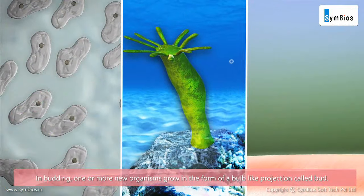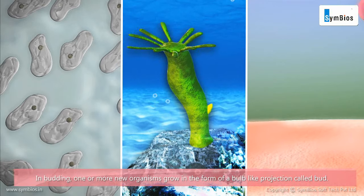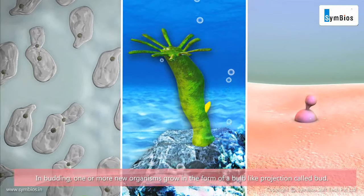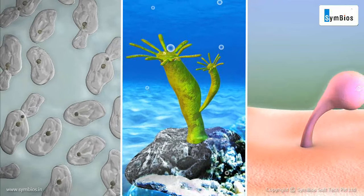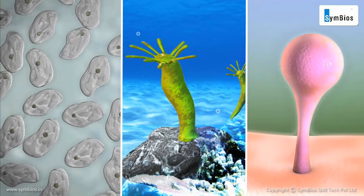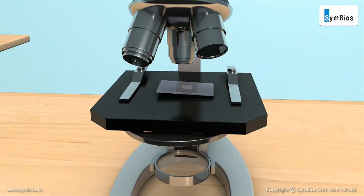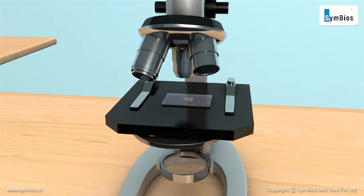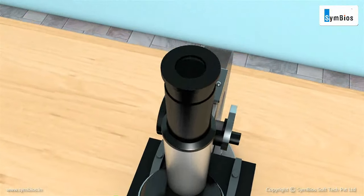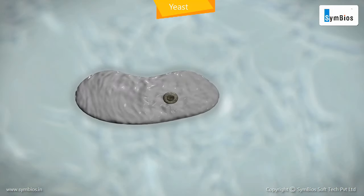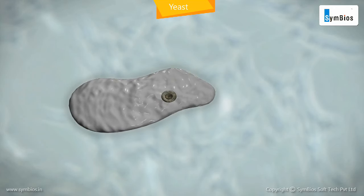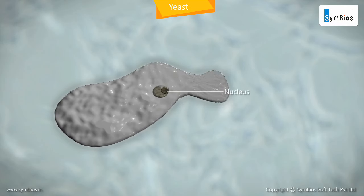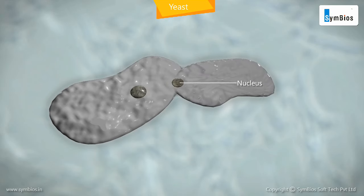In budding, one or more new organisms grow in the form of a bulb-like projection called a bud. It grows and then may eventually break away from the parent. If you view a solution of warm water, sugar and yeast powder under the microscope, you will observe in yeast that a little cytoplasm accumulates at one end of the cell and the bud is formed. The nucleus divides into two and one of them enters the bud.